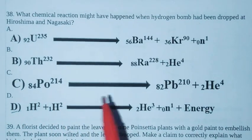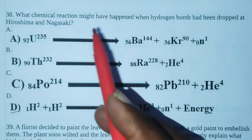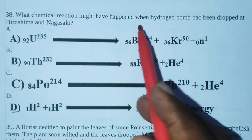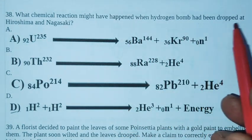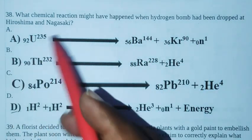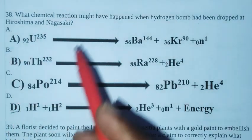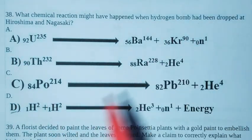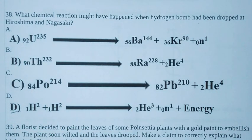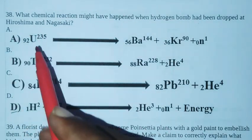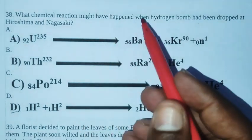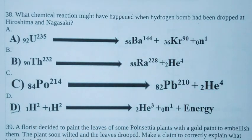38. What chemical reaction might have happened when nitrogen bomb had been dropped at Hiroshima and Nagasaki? At Hiroshima and Nagasaki, fission reaction happened. Not fusion, fission reaction. Option D is the right answer.